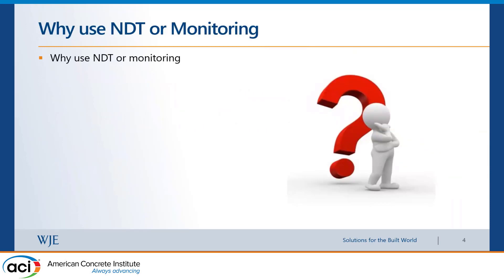So why do we use NDT or monitoring? There are a lot of reasons, but if you want to put them in three buckets, the first one is behavior — the 'why.' Why is something happening? Why is my concrete falling? You might have corrosion damage, and for that you can use half-cell potential measurements to find out where the hot areas with high probability of corrosion damage are. So 'why' is the question we use to identify the cause of distress, damage, or a problem with the structure.